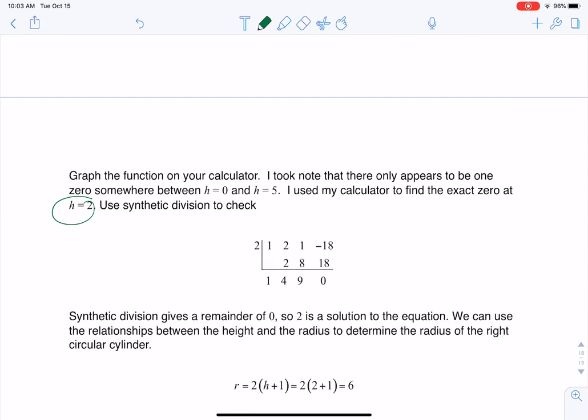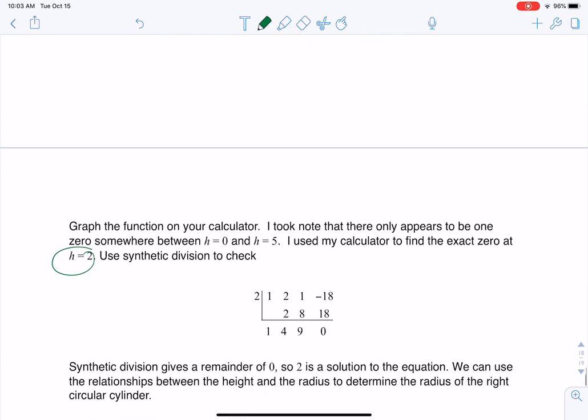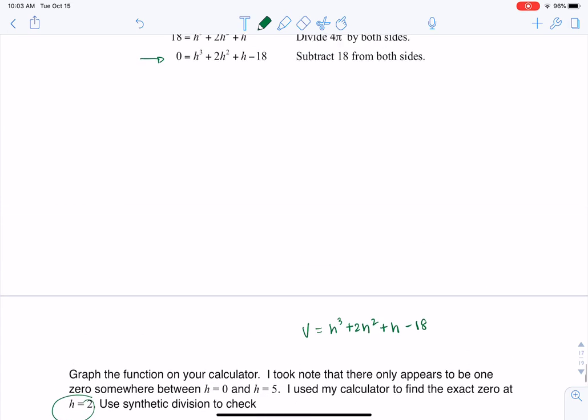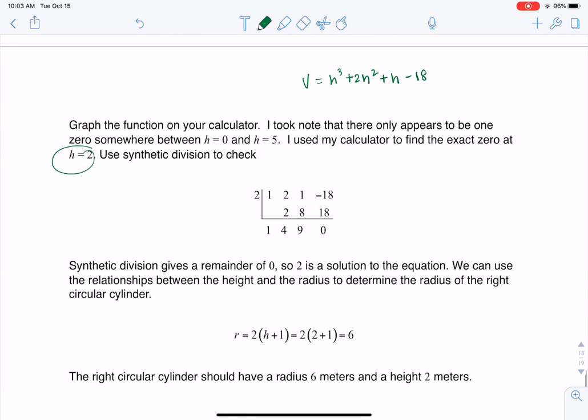Let me write this. Okay, so we had our volume was equal to h cubed plus 2h squared plus h minus 18. Let me just double check that that was the equation I'm dragging down. Yeah. Okay. Oh, I'm going to sneeze. Excuse me.